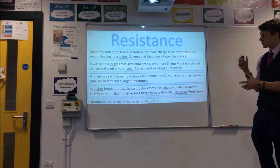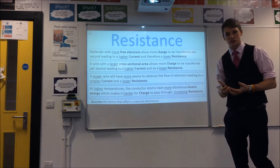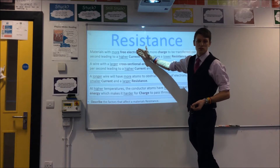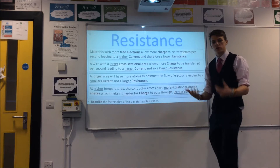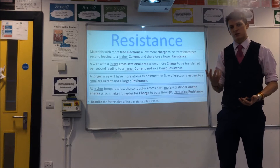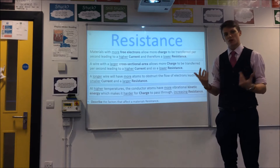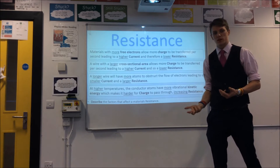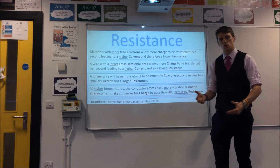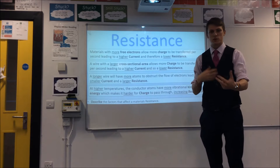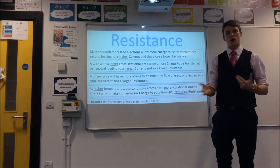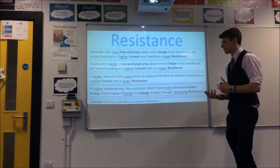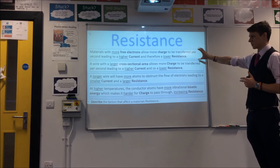So let's look a bit more at the things that can affect resistance. Good conductors, as you should know, are things with free electrons, which is what makes metals such good conductors — their structure has a lot of free electrons in it. Generally speaking, the more free electrons your structure has, the more charge you can pass per second, therefore the higher current you can have. And if you can pass a higher current, you have a lower resistance.